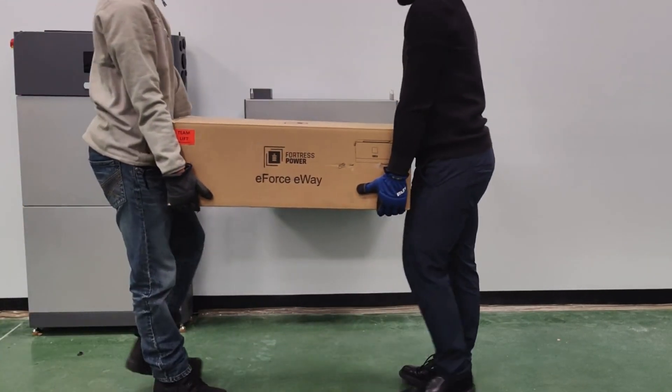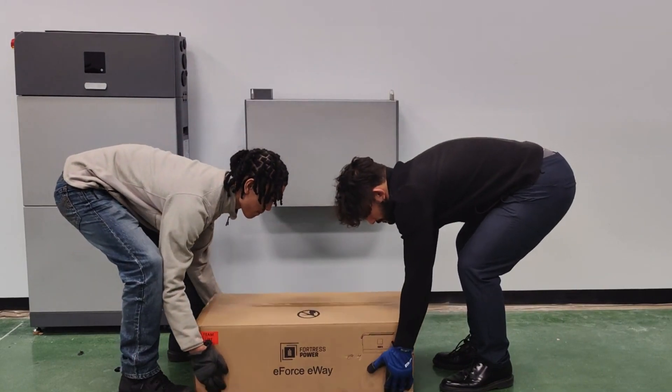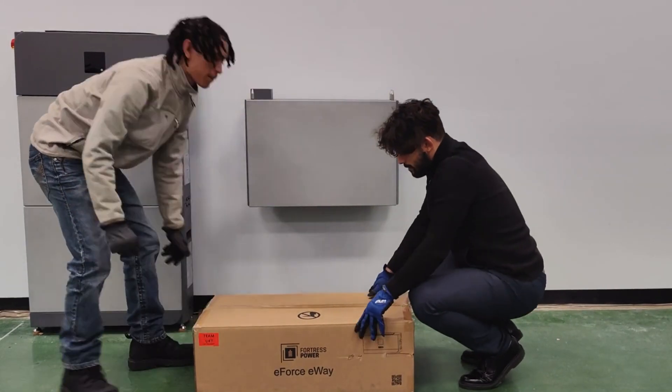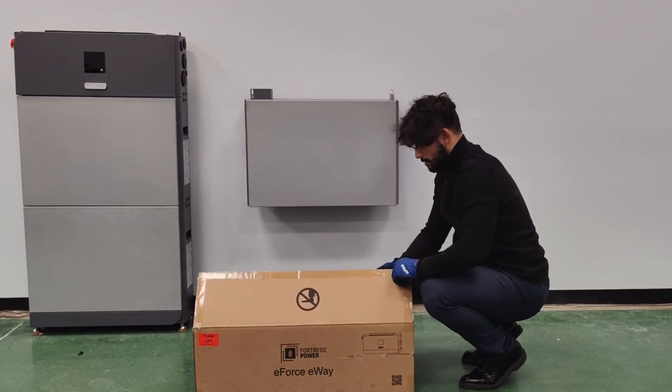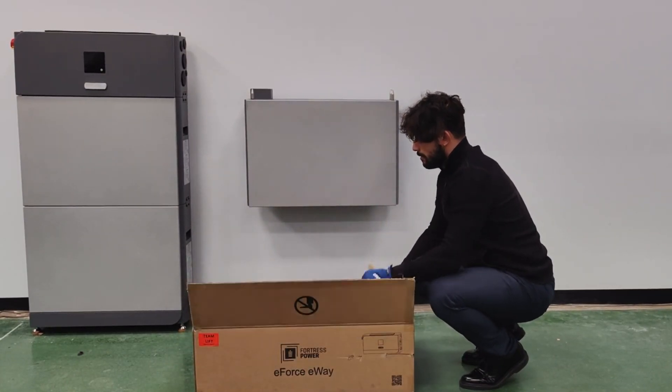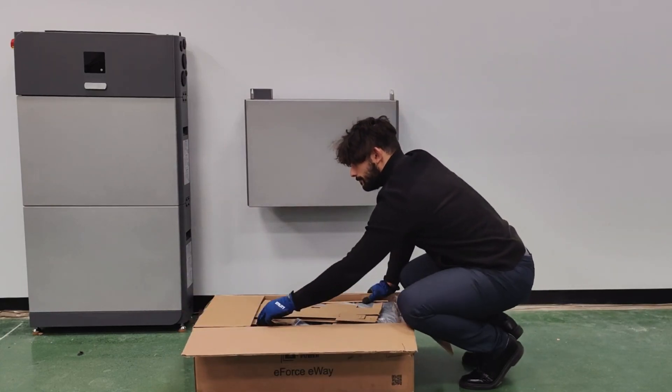Let's begin by unboxing the E-Way, which will serve as a connection hub to other E-Force batteries and the Envy Inverter. Carefully remove the external packaging to reveal the securely packed components. Ensure all items are present before proceeding.